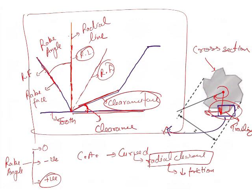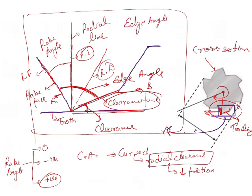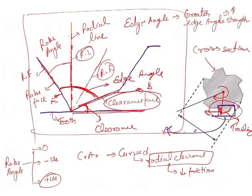There is another angle seen between the rake face and the clearance face — the front side and the back side of the blade — known as the edge angle. The edge angle is the internal angle at the edge formed by the two surfaces of the blade. Greater the edge angle, greater the strength of the burr, meaning less chances of fracture due to more material present.